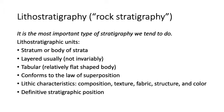Lithostratigraphic units have characteristics that we put into descriptions: composition, texture, fabric. Composition refers to mineral composition; texture to visible features; fabric to larger-scale features or sedimentary structures. They'll also have a defining color, and we refer to the Munsell rock chart for color descriptions. A stratum is defined by the rocks above and below it.